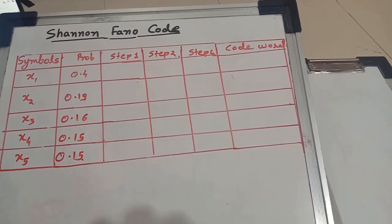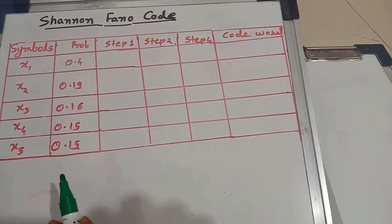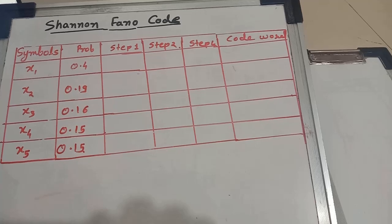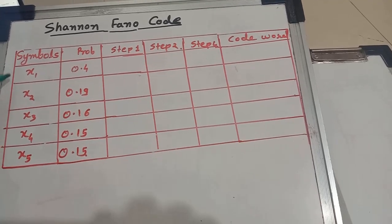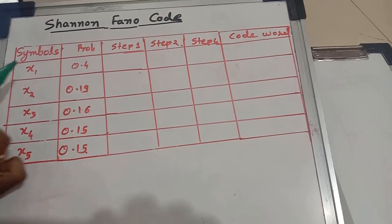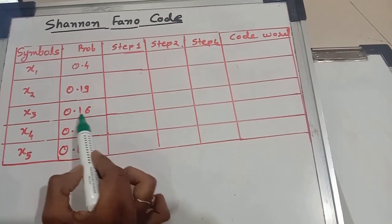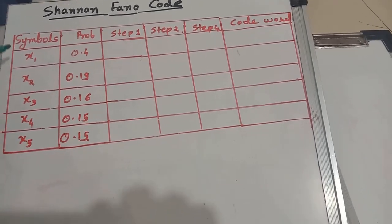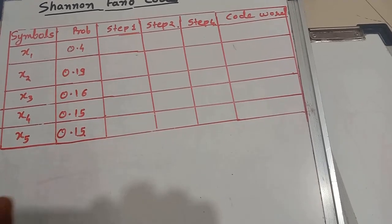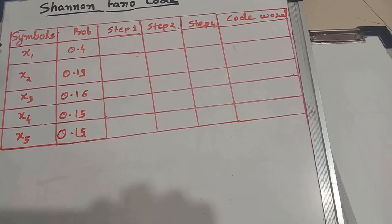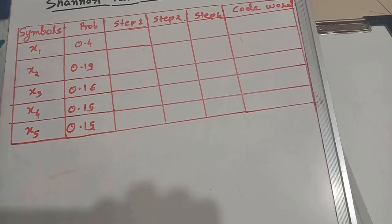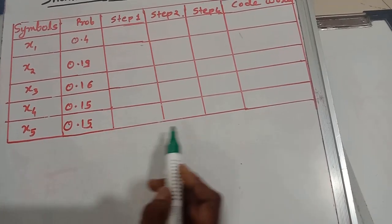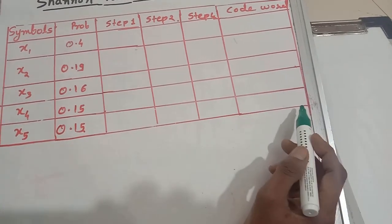In variable length coding, we assign the codeword to the symbols which we transmit on the communication channel. In this example we will consider five symbols having the probabilities 0.4, 0.19, 0.16, 0.15, and 0.15. These probabilities are already arranged in decreasing order. The symbol having larger probability should be assigned a small codeword, and the symbol having less probability of occurrence should be assigned a codeword having large length.